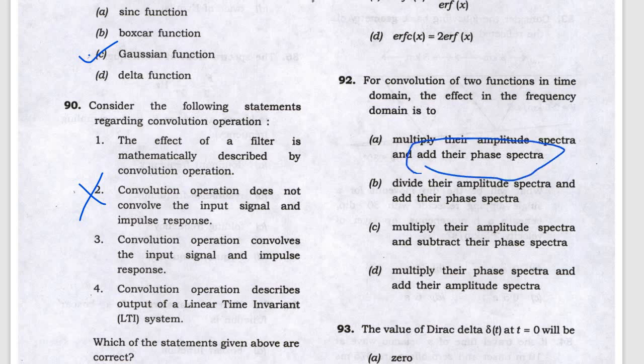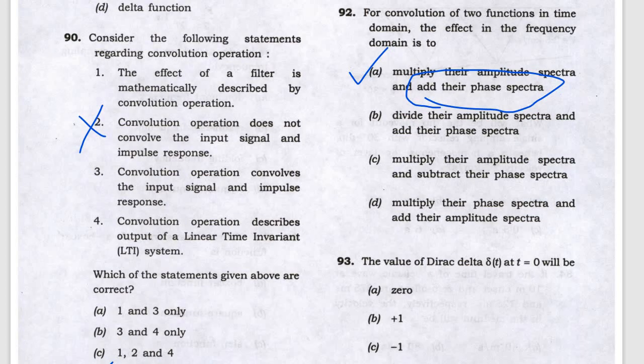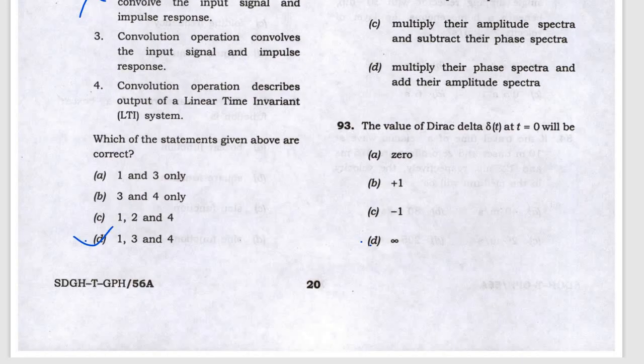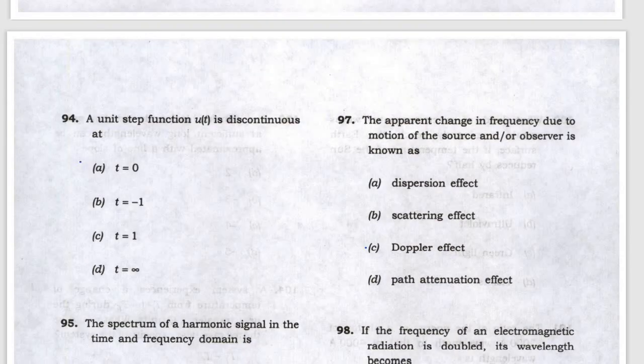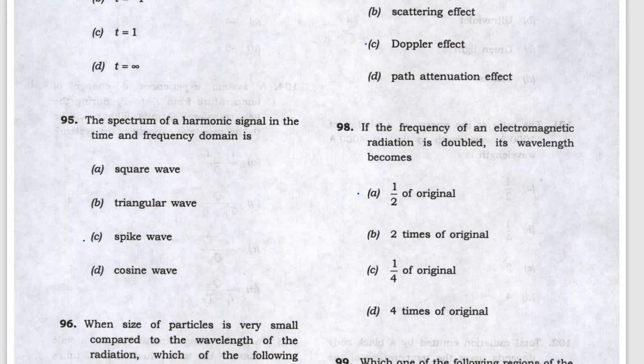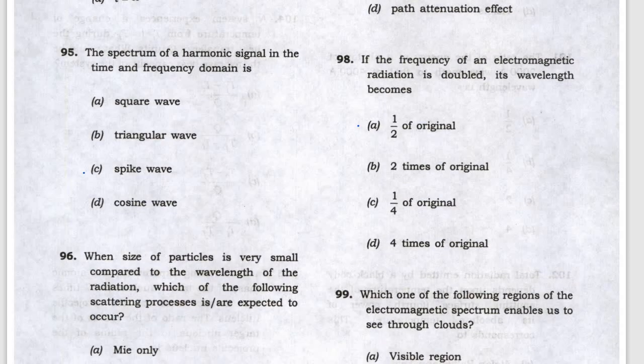The value of the Dirac delta function at t equals 0 is infinity, so answer is D. The unit step function has discontinuity at t equals 0. The spectrum of harmonic signal in time domain is the spike wave, so answer is C.